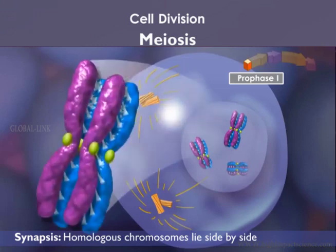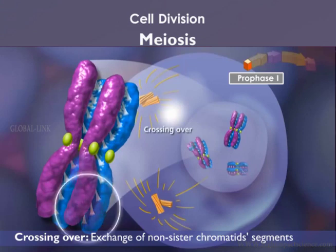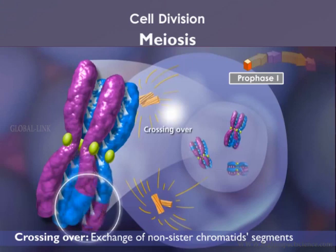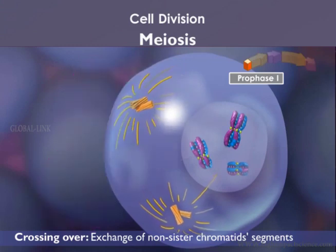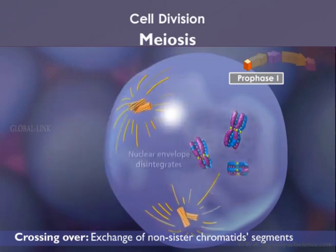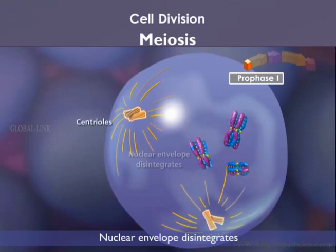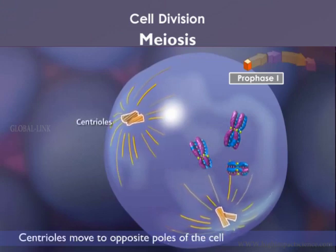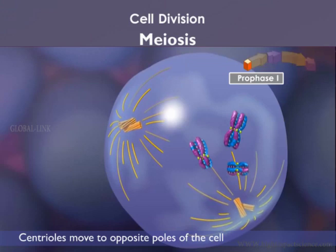Once this happens, the second event, called crossing over, can occur. During crossing over, a physical exchange of chromosome segments of non-sister chromatids occurs, which increases genetic diversity. Prophase 1 concludes with the disintegration of the nuclear envelope as the duplicated centriole pairs move to opposite poles of the cell while extending the spindle fibers.